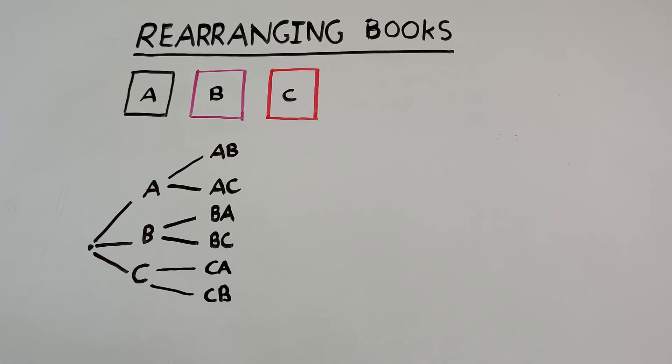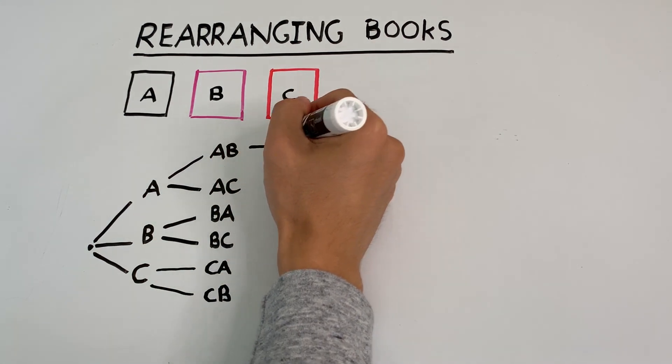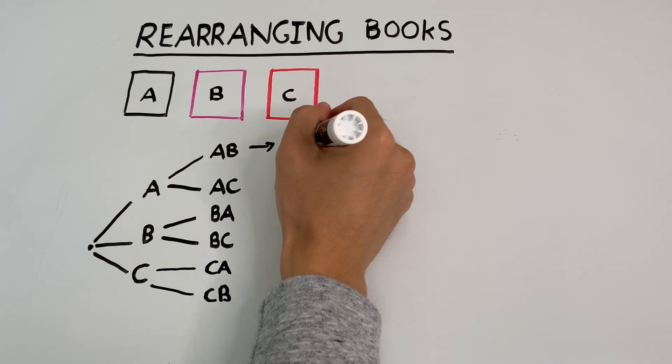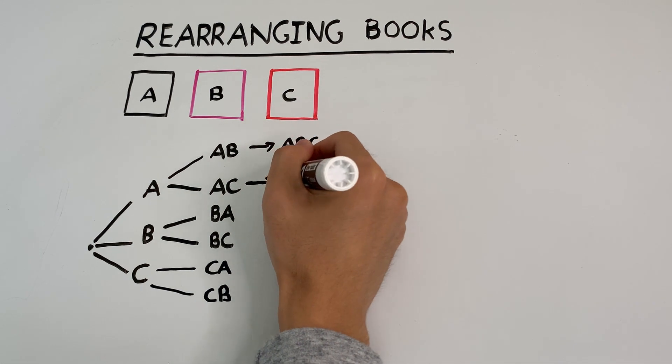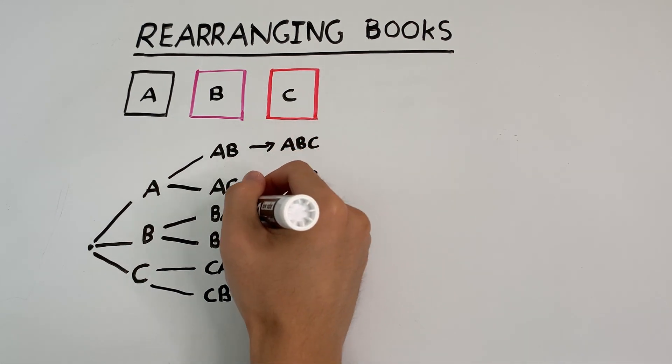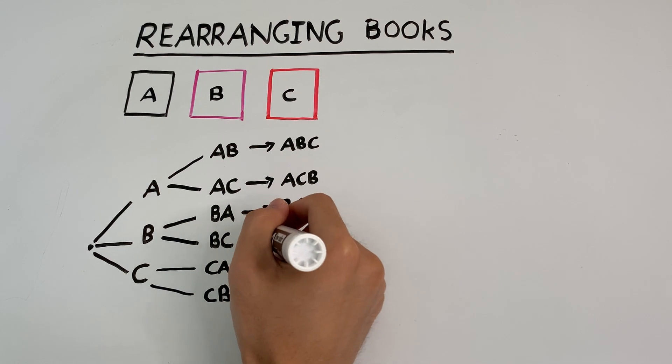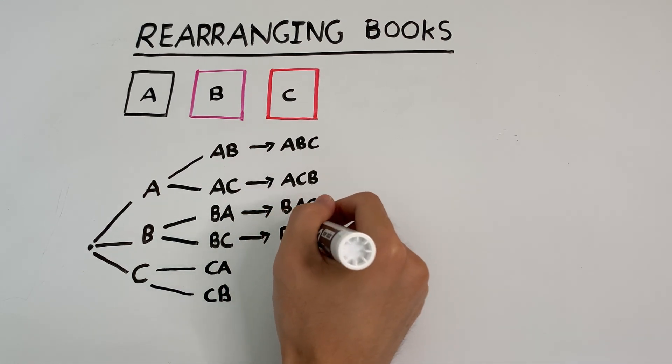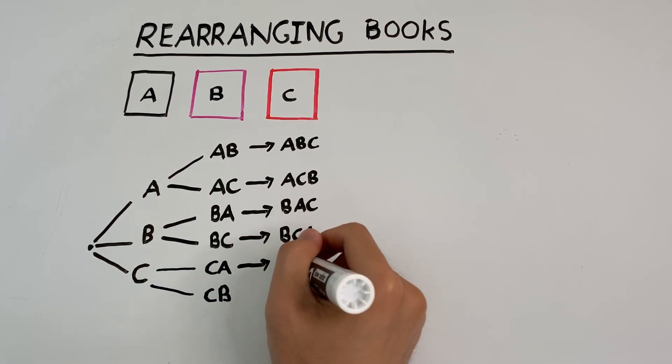And once two books are chosen, then there's only one book left remaining, and that goes last. So here, our tree would finish off with book C. Here it would finish with book B. Book C, book C, book C, book A, and we just continue filling this in.